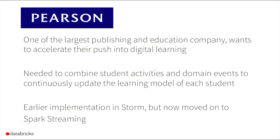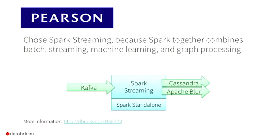Another interesting use case is Pearson, one of the largest publishing and education companies. They want to accelerate their push into digital learning by combining student activities and domain events to continuously update a model for each student on how they are learning. They had implemented this earlier on Storm but moved to Spark Streaming, which is going into production very soon. They chose Spark Streaming because it combines batch and stream processing, machine learning, and graph processing all in one system. They run on Spark standalone, taking data from Kafka and pushing it out to Cassandra and Apache Blur.